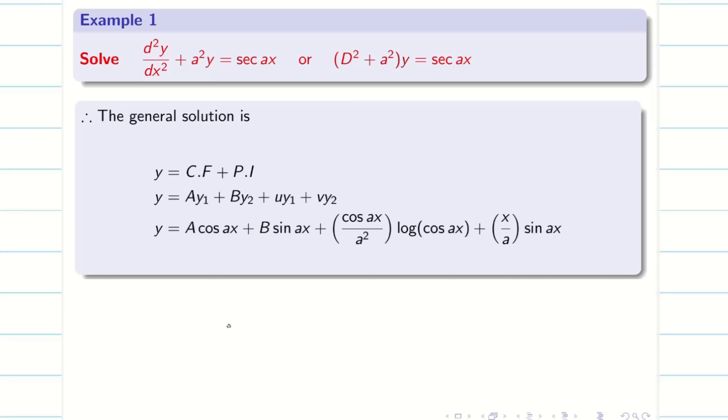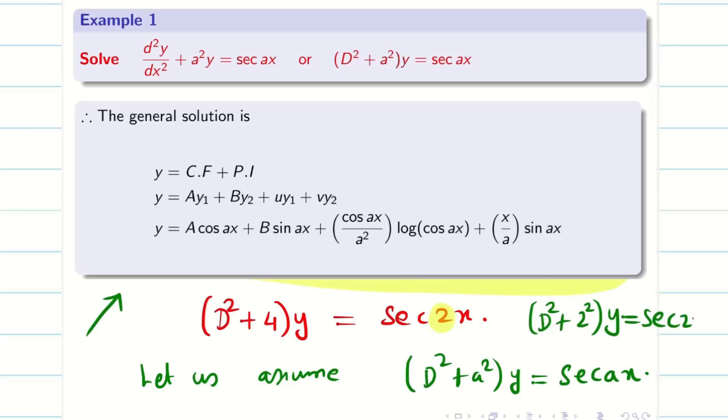So, in this session, we solved two important problems. That is, my RHS is secant ax and cosecant ax. In exam point of view, they can ask the question like this. Solve d² + 4 into y is equal to secant 2x. If they ask in numbers, never try to solve in terms of numbers. Now, you see secant 2x. So, what you have to do, we have to write like this. Let us assume d² + a² into y is equal to secant ax. Then, solve the problem for general. We know how to solve this. You can see the final answer given here. Find the final answer. Now, we know that from the question, d² + 4 into y is nothing but d² + 2² into y is equal to secant 2x. Substitute a equal to 2 in the final answer.